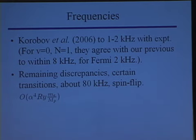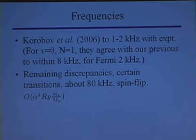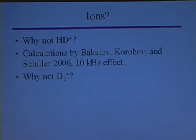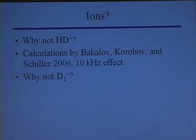There are still remaining discrepancies having to do with spin-flip transitions, and I think Vladimir is looking at those. So why not HD plus? Why not look for the deuteron quadrupole moment? This is a problem that has come up now and then in this study. It has been calculated by Korobov and collaborators; they find it's about a 10 kilohertz effect. There are some new experiments being done by Schiller's group, which Gordon showed some of the transition frequencies for, and they can't get to this 10 kilohertz precision yet.